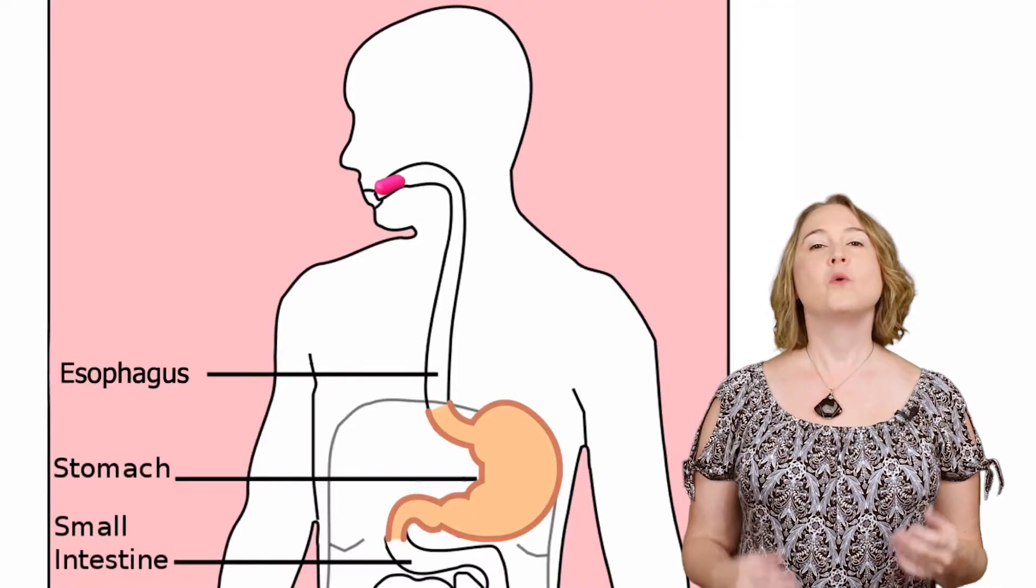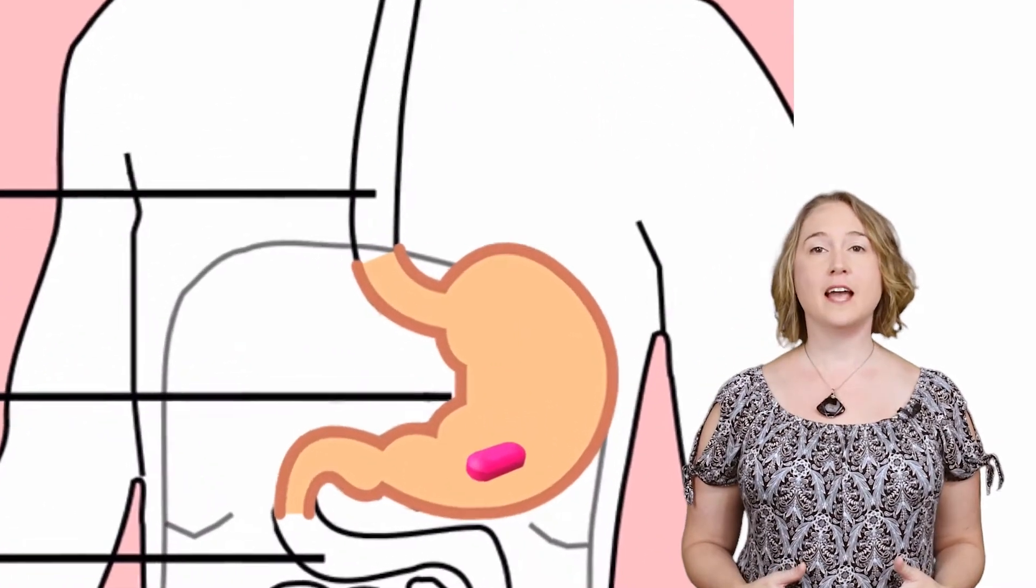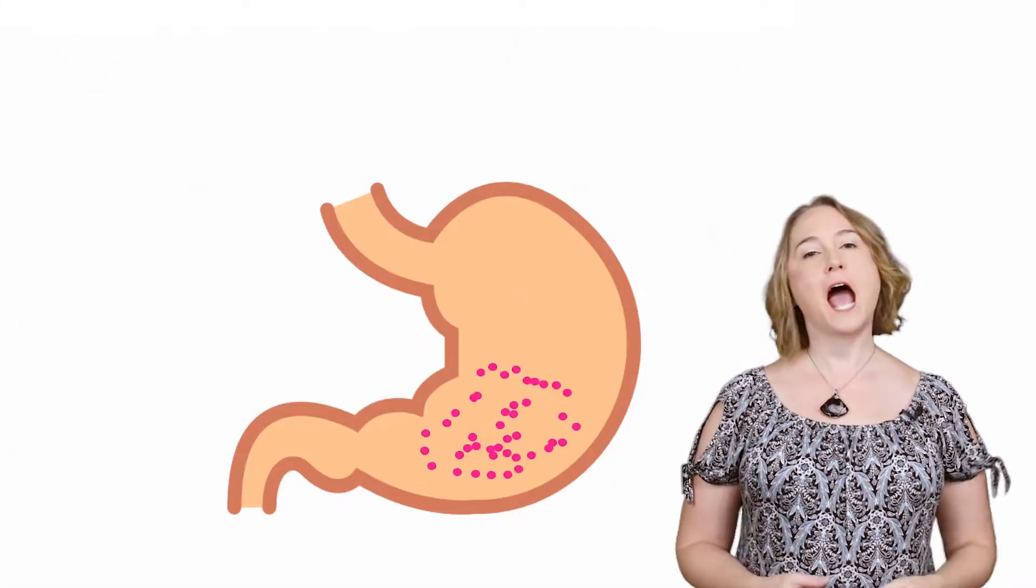Let's talk about the journey a drug takes through your body to carry out its therapeutic effect. When you swallow a pill, it travels into your stomach, where it will start to break down. If the pill is a tablet or a capsule, the active ingredient is mixed with many other inactive chemicals to help it along its way.